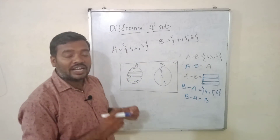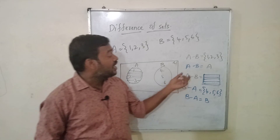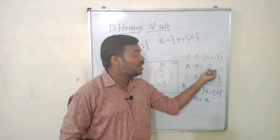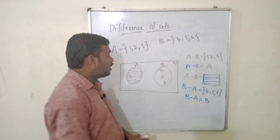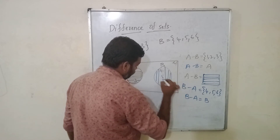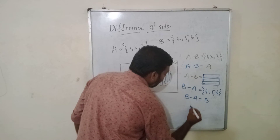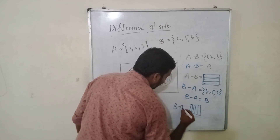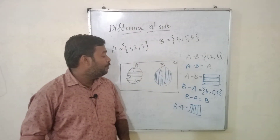That means if you are considering two disjoint sets and taking their difference, the first set in the difference will be your answer. A minus B is A, and B minus A is B. So here we shade the region accordingly — vertical lines represent B minus A.